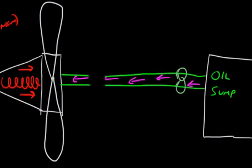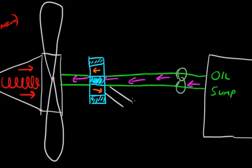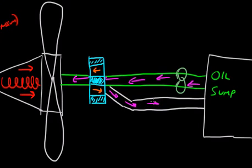We're going to erase part of this and draw a pilot valve. The pilot valve is going to look something like this, and we're going to divide it into segments. In the neutral segment, no oil can flow through. In this segment, oil can flow into the hub. And in this segment, oil can flow out of the hub. We also need a line to return oil back to the oil sump when it flows out of the hub, so we'll draw an oil return line right there.